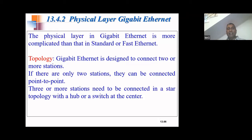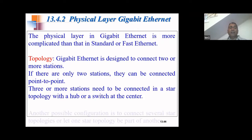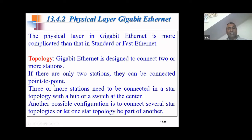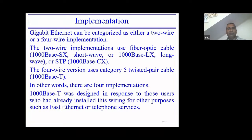In Gigabit Ethernet, a switch was used to support full-duplex communication, or a hub to support half-duplex communication, both in a star topology with the hub or switch at the center of the hosts. Another possible configuration was to connect several star topologies together, where one star topology could be part of another star topology.